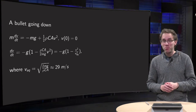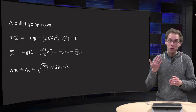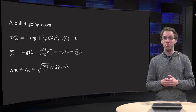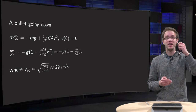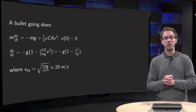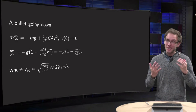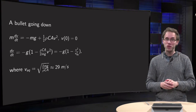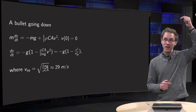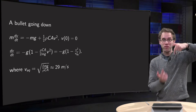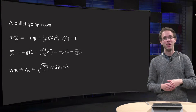We know the height reached by our bullet, and we can now compute the downward movement of the bullet using this height and zero velocity as our initial condition. We cannot however reuse the analytical results of the upward movement, because now gravitational and friction force do not point in the same direction.